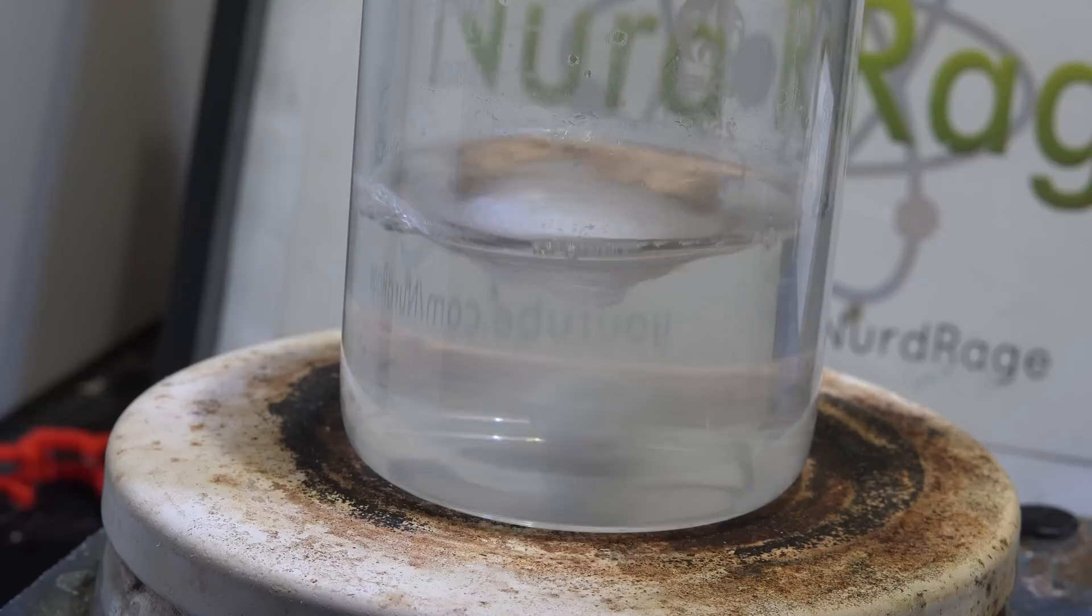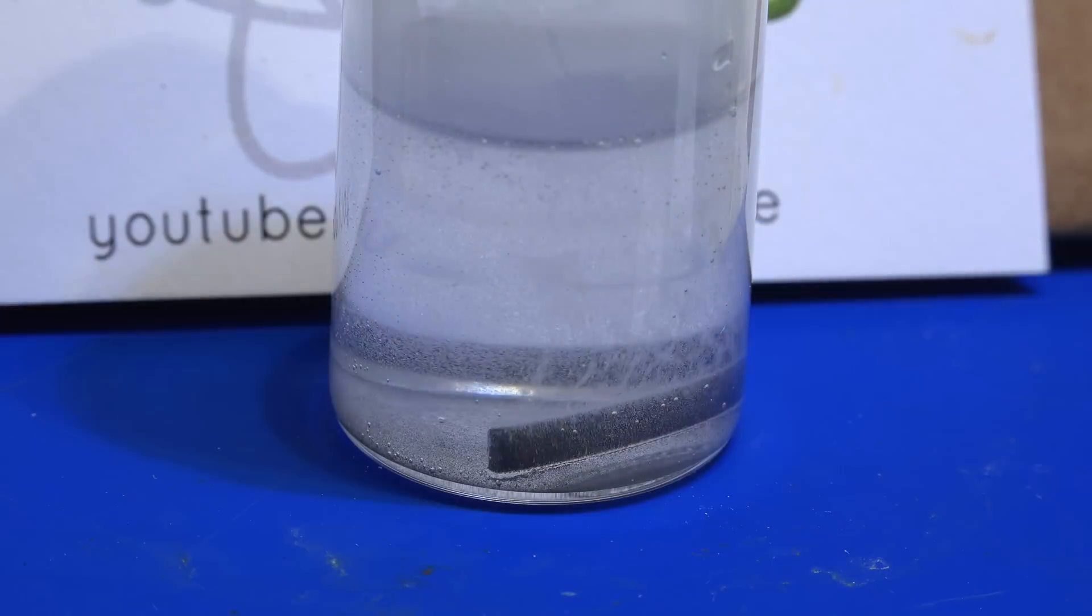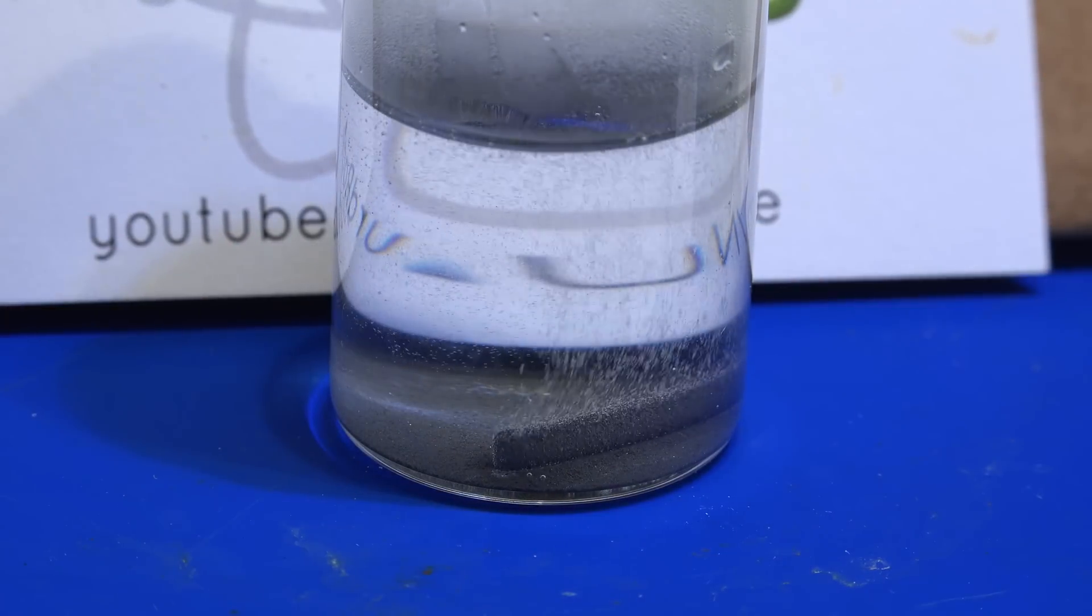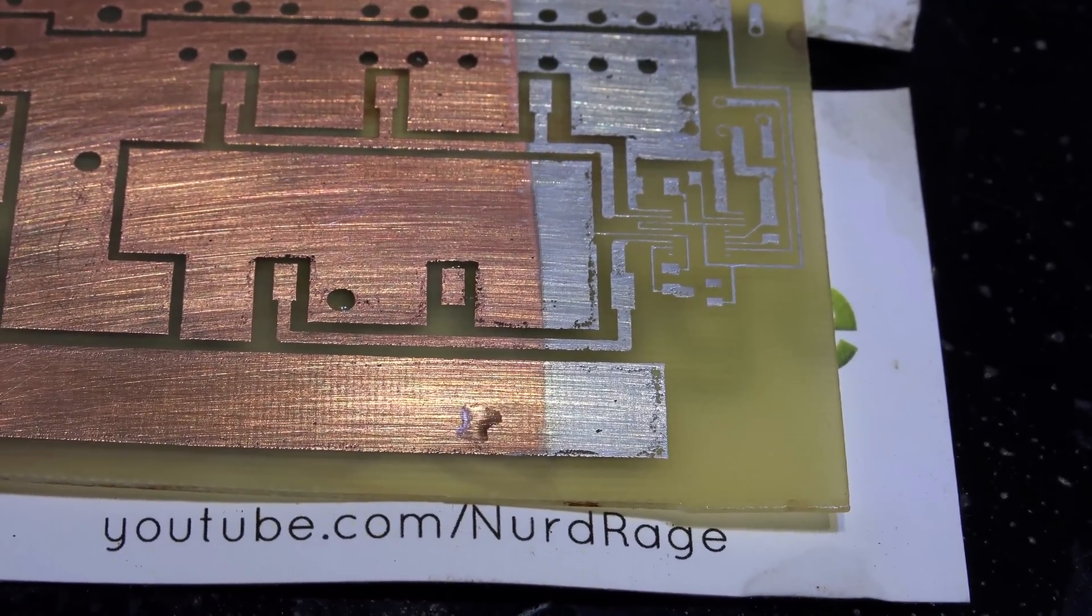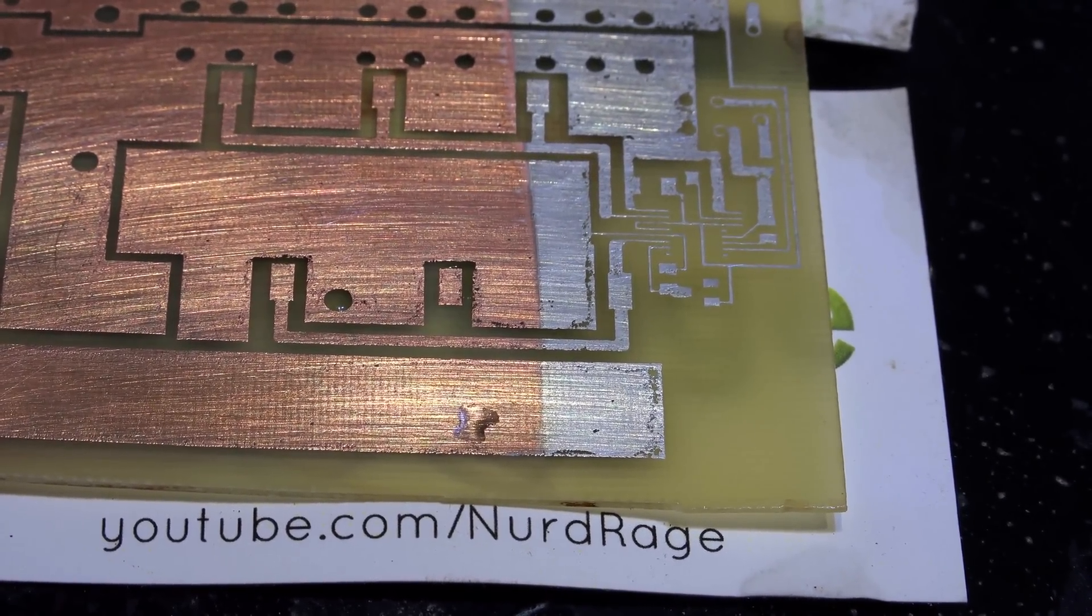So rather than making a large amount and storing it, store the precursors and just make small amounts as you need it. Anyway, that was homemade PCB tinning solution by redox flipping. Thanks for watching.